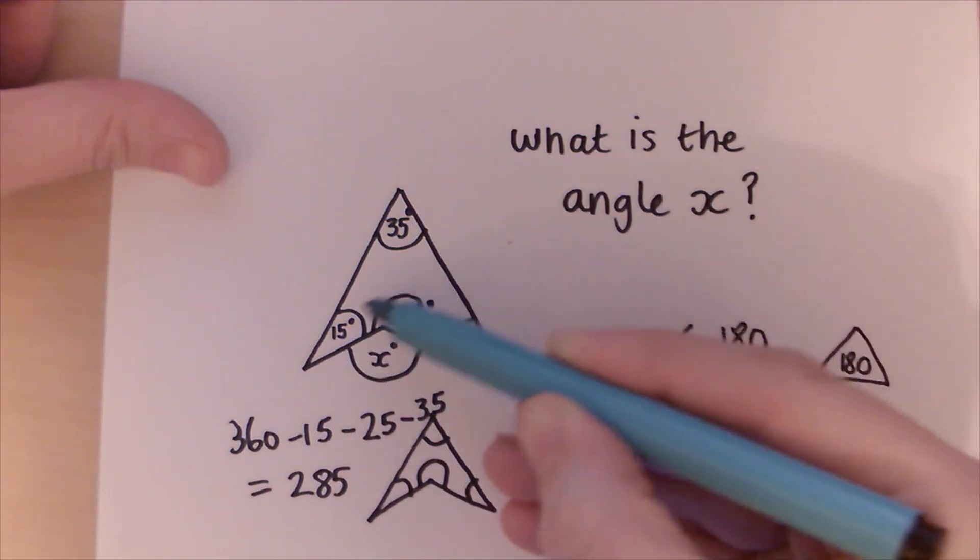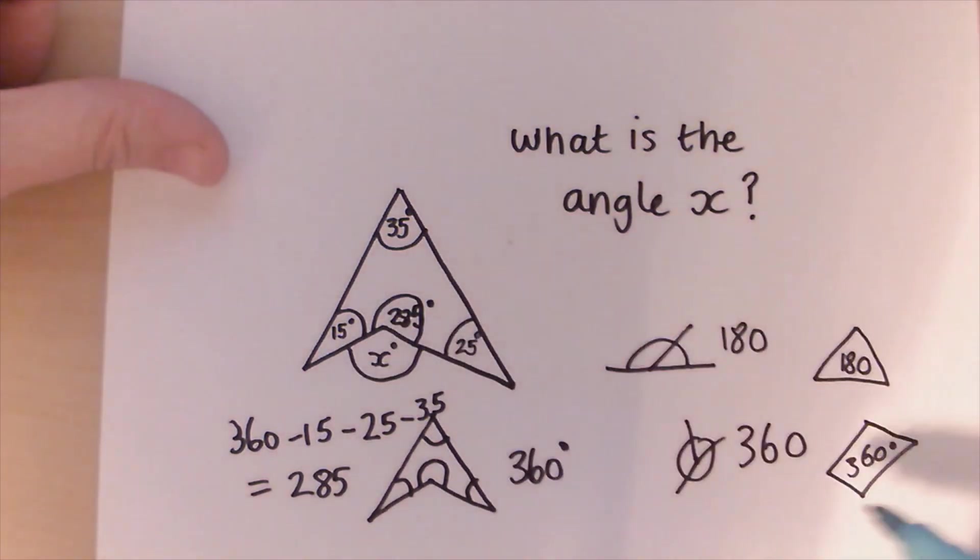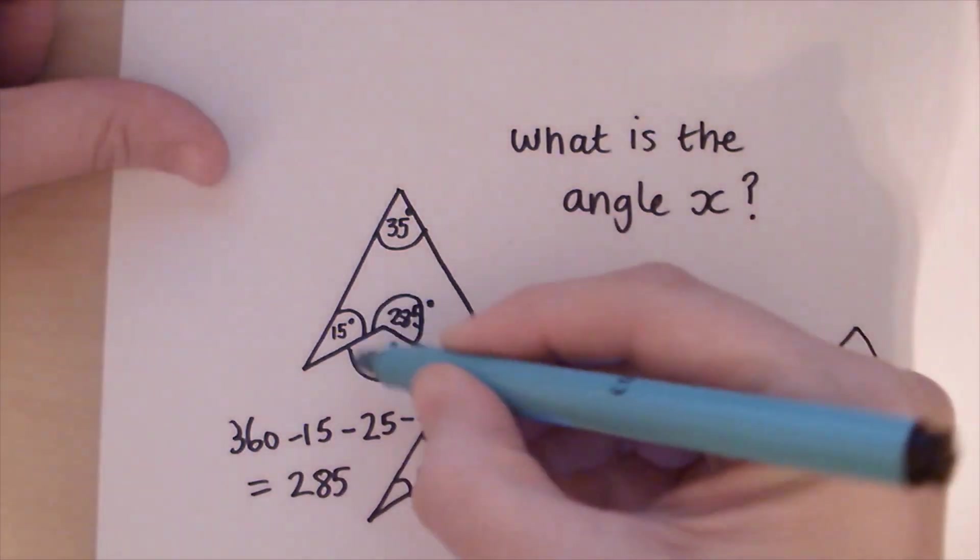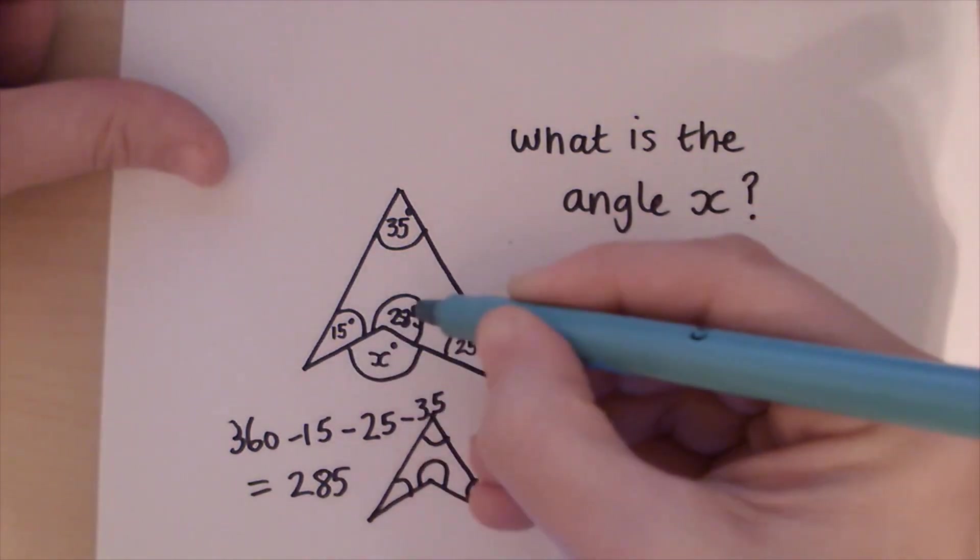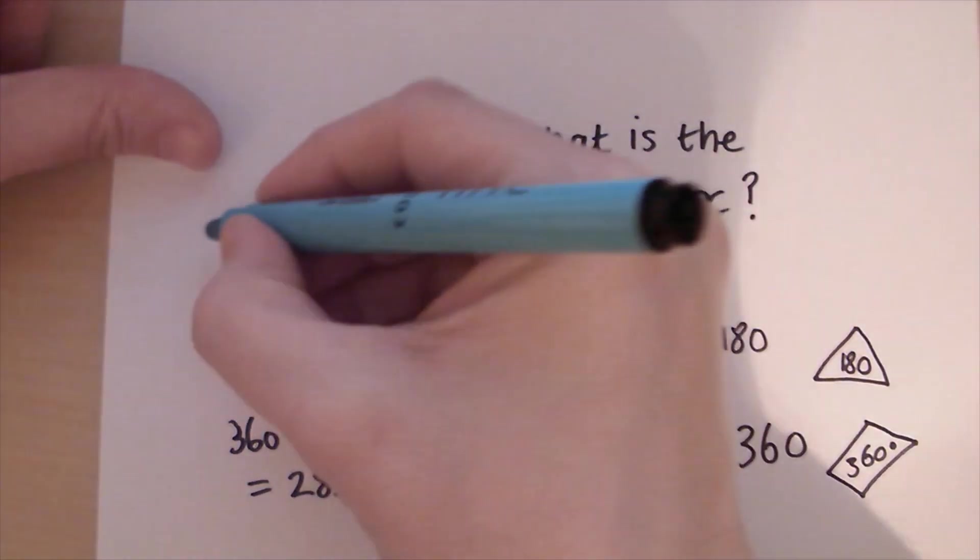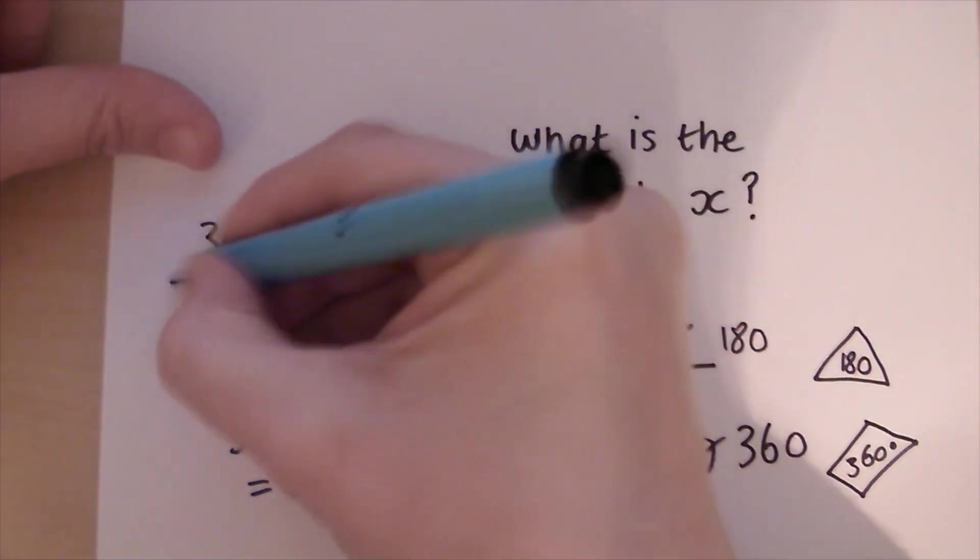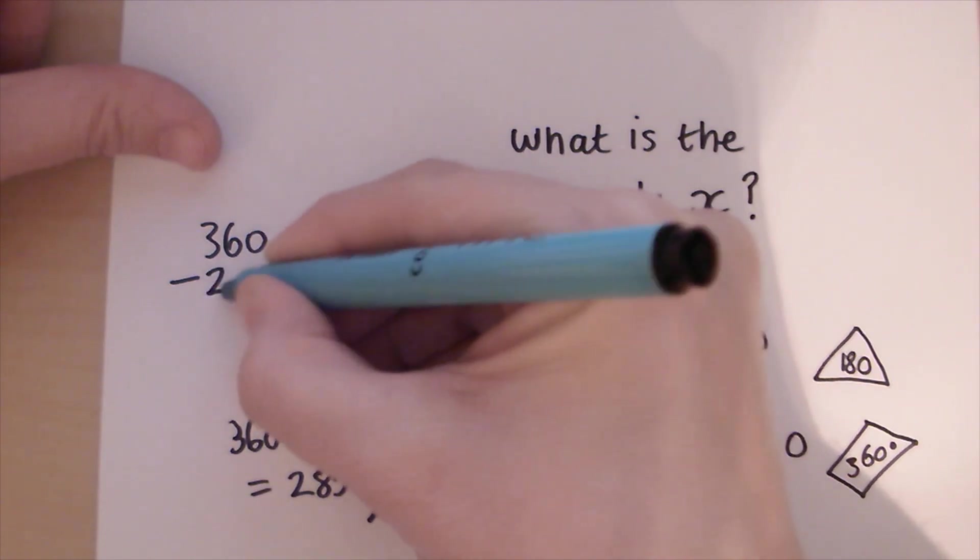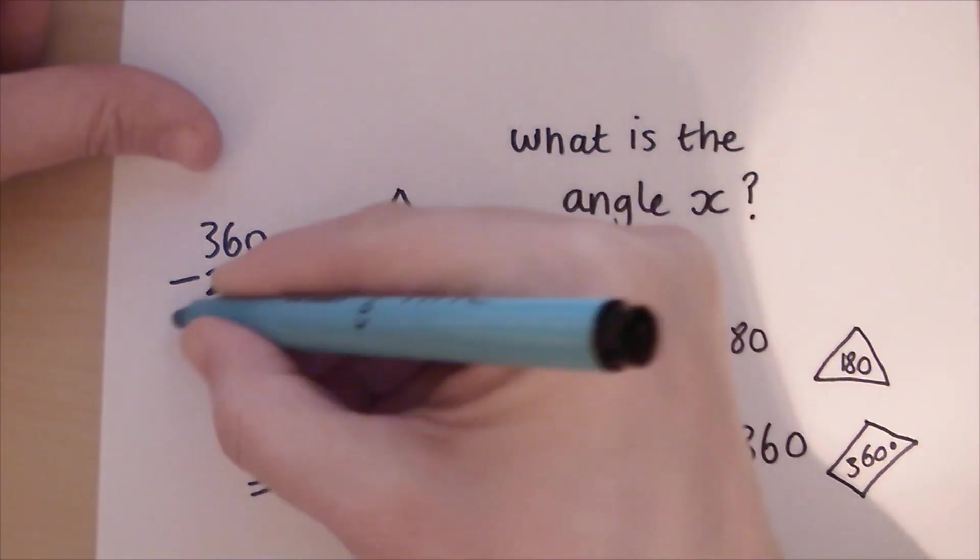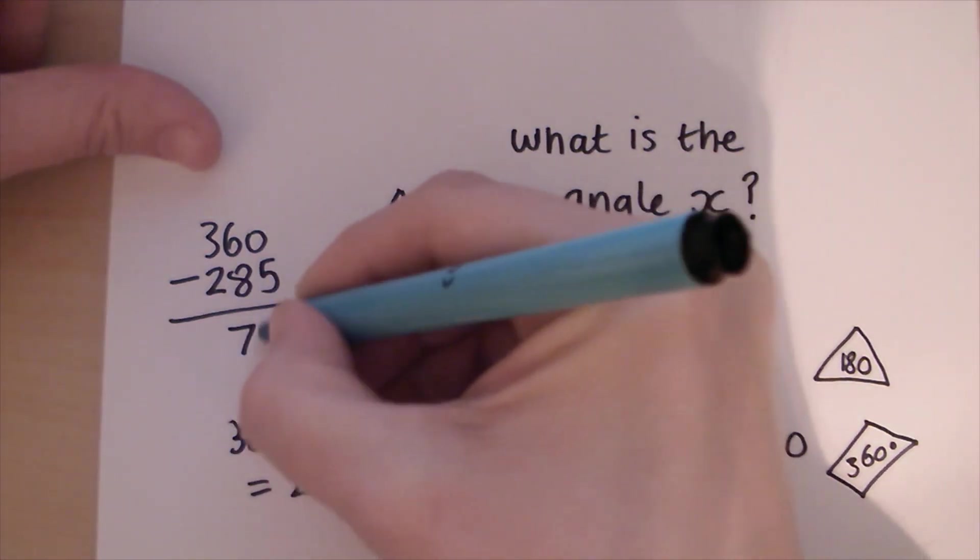Angles around a whole point add up to 360 degrees. So if all of these are 360 degrees, 360 degrees and take away 285 leaves me with 75 degrees.